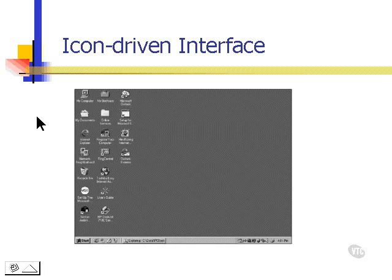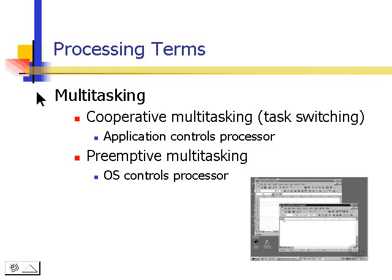Let's talk about some processing terms in regards to software. Multitasking can be accomplished in two different ways. With the earlier software and hardware, we used what was called cooperative multitasking or task switching. In this type of multitasking, the application actually controlled the processor. This created problems with earlier applications because they could actually hog the processor, making themselves look better and other programs not look as good.